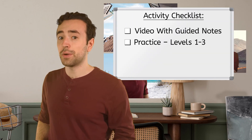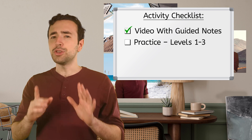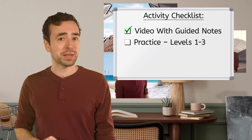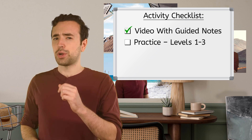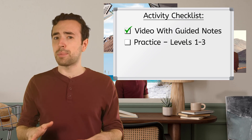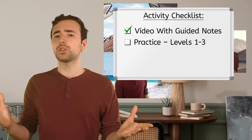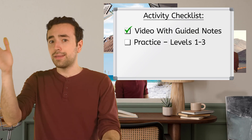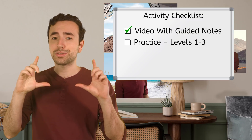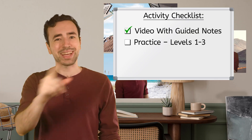Thank you so much for your help today. Now we know when you want to scale an image — make it smaller or larger — you need to adjust both the horizontal and vertical measurements to keep it in proportion. Once you're done watching this video and finishing up your guided notes, you can move on to levels 1 through 3 in the online practice. Until next time, keep questioning, keep calculating, and remember: whether scaling something larger or smaller, adjust the width and the height to make it just right. See you next time!